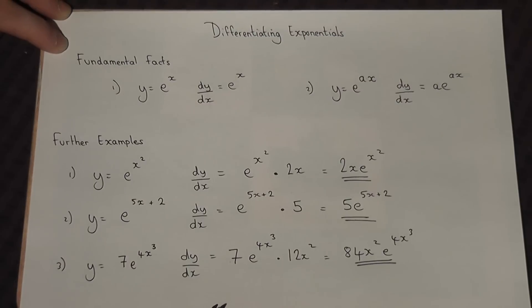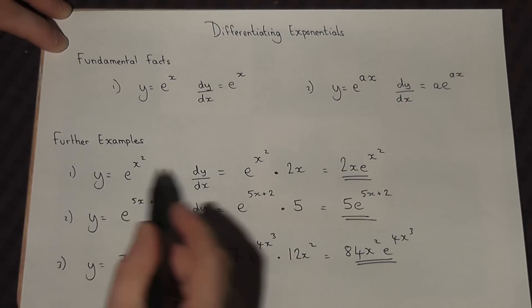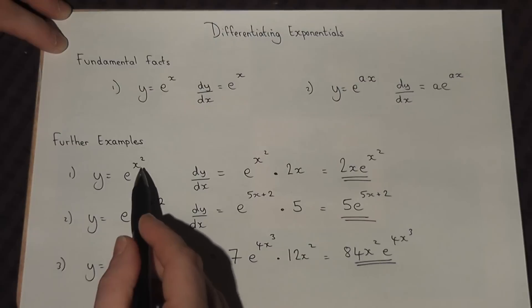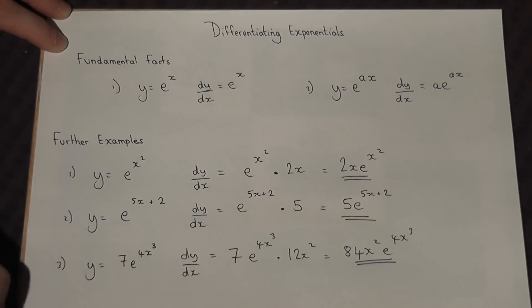So the golden rule: we keep e the same and then multiply by the differential of the power.